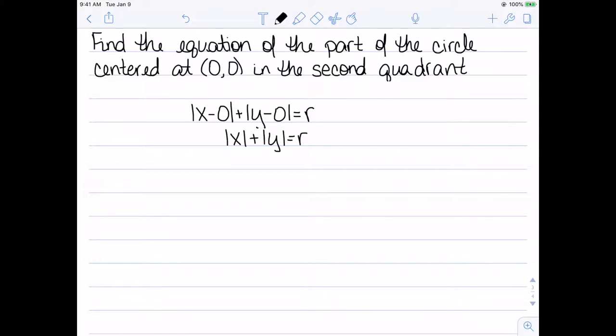Since we specifically want the part in the second quadrant, we know that x needs to be negative and y needs to be positive, which gives us negative x plus y equal to r.